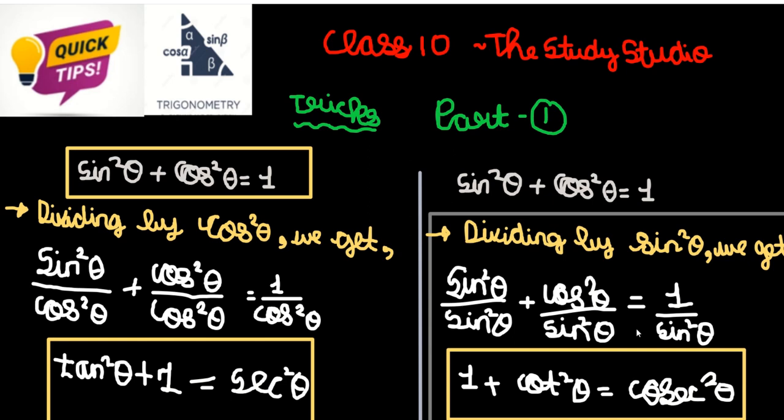Now, what do we get when we divide by sin squared theta? 1 plus cot squared theta is equal to cosec squared theta.